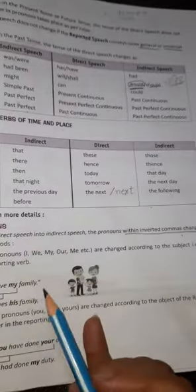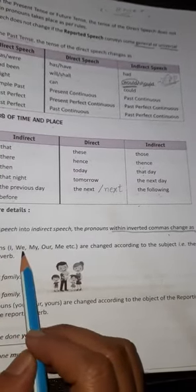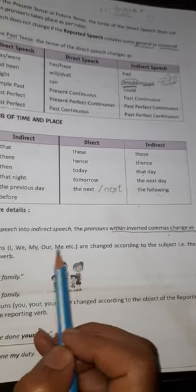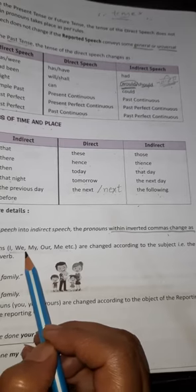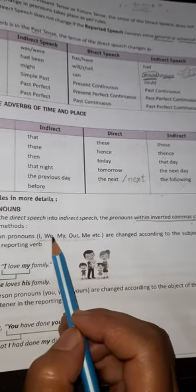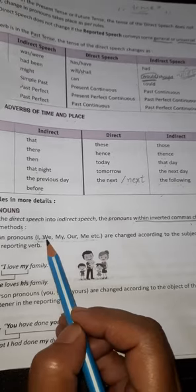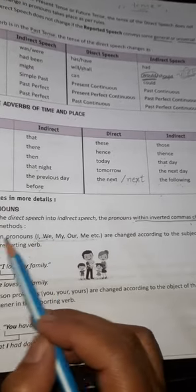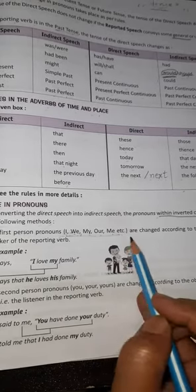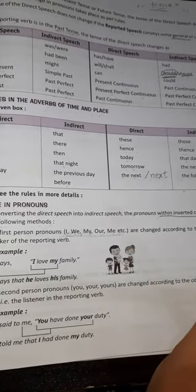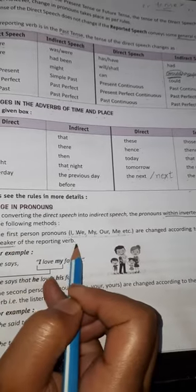Now, change in pronouns again. While converting the direct speech into indirect speech, the pronouns within the inverted commas change as per the following methods — the three methods we covered on the previous page. The first person pronouns: I, we, my, our, me, etc. These first person pronouns are changed according to the subject or the speaker of the reporting verb.